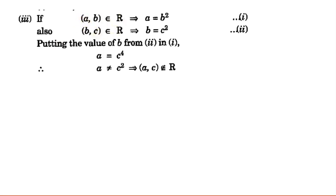If (a,b) belongs to R, it means a is equal to b². And (b,c) belongs to R, it means b is equal to c². Now put the value of b in the first, we get a equal to c⁴. So a is not equal to c², it means (a,c) does not belong to R.